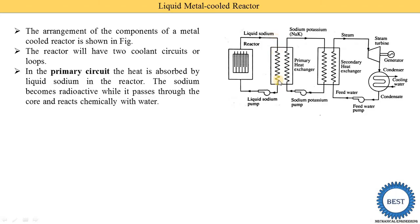In the primary heat exchanger, liquid sodium transfers its heat energy to sodium-potassium alloy. This heated sodium-potassium is then supplied to the secondary heat exchanger, where it transfers heat energy to feed water, converting it into steam. This steam is supplied to the steam turbine, where steam energy is converted to mechanical energy, which drives the generator to produce electrical energy. Exhaust steam from the turbine goes to the condenser, where it is condensed back to water, and the cycle continues.